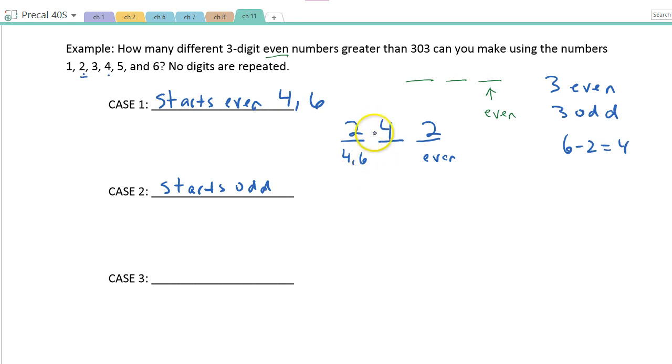So if it's even, it's going to be 2 times 4 times 2. What is that? 8 times 2, that's 16. So for the first case, if it starts with a 4 or a 6, there are 16 different ways to do it.